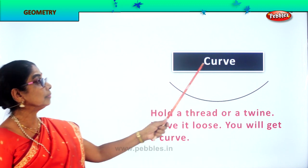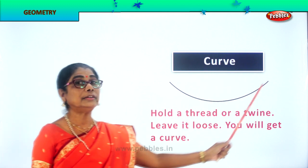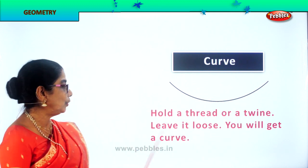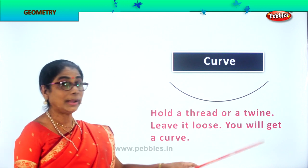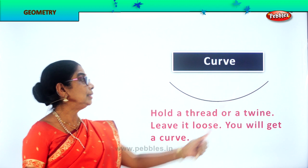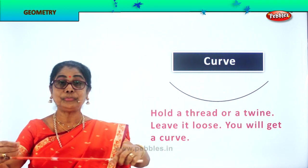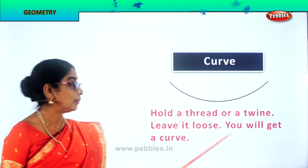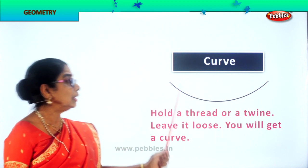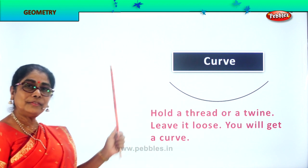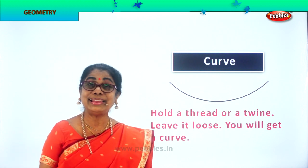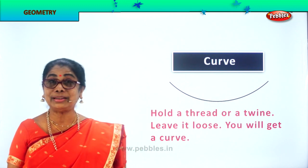Look at this. What is this? Curve. You know how to make a curve. If I give you a bit of thread, can you make a curve? Hold a thread or a twine. If you hold it at both ends straight, you will get a straight line. But if you hold it loose, you will get a curve. You can get a curve like this, or like this — a side curve facing that side. You can make a curve any way you like. Take a twine and enjoy making different types of curves.